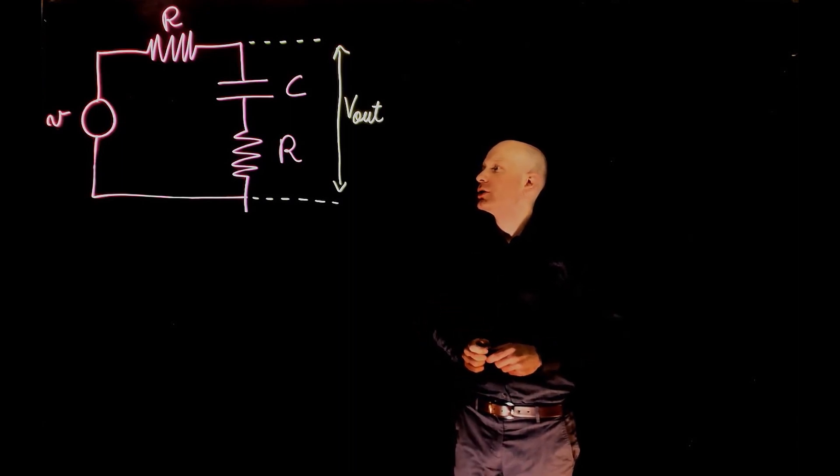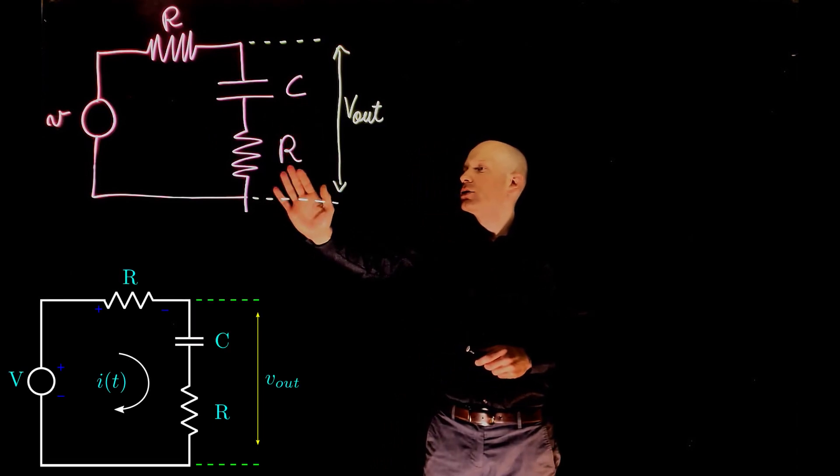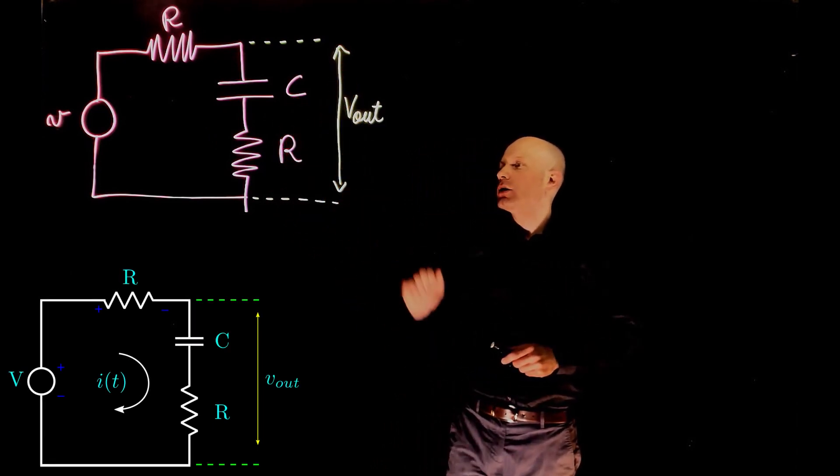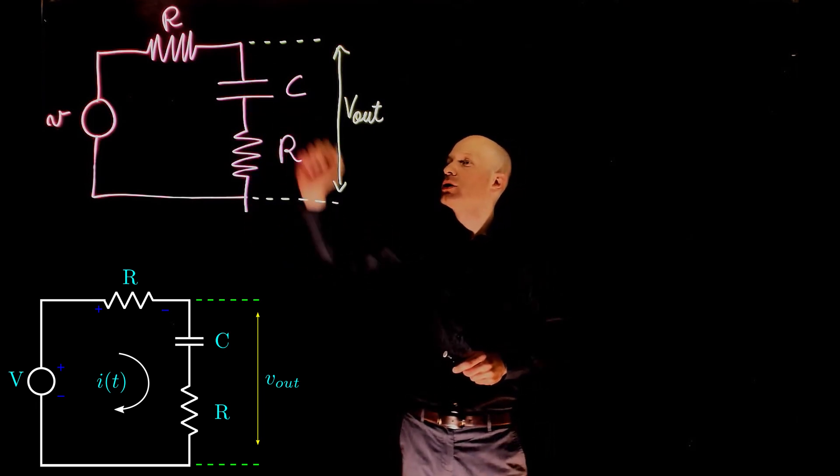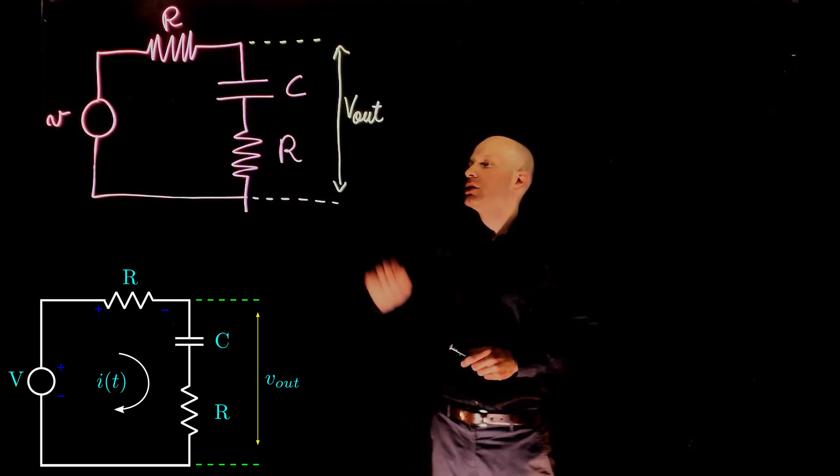In this example, we have a simple circuit composed of an input voltage V, a resistor, a capacitor, and another resistor in series, and an output voltage Vout that is measured between these two points, which corresponds to the voltage drop across the capacitor and this resistor.